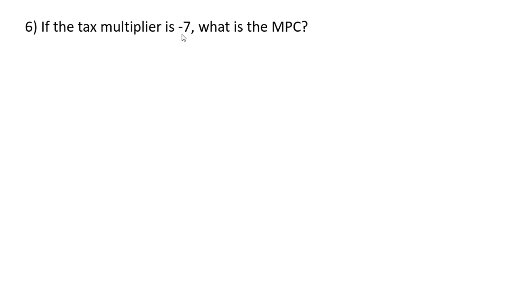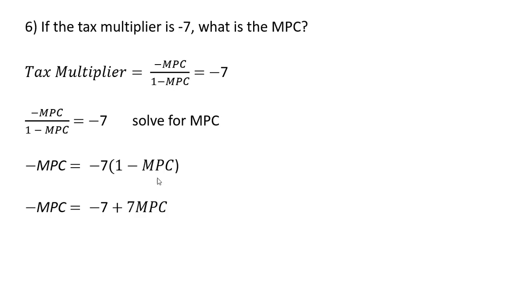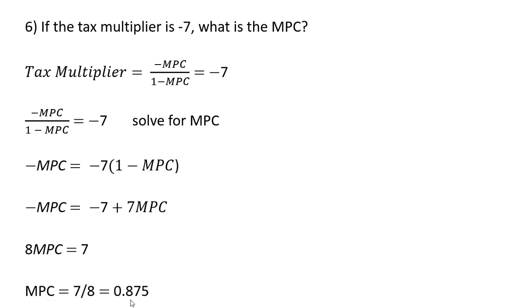Example 6. If the tax multiplier is minus 7, what is the MPC? The tax multiplier is given by the equation, and we set it equal to minus 7 to solve for MPC. Multiplying both sides by 1 minus MPC: on the right-hand side, minus 7 times 1 is minus 7, and minus 7 times minus MPC is plus 7 MPC. Adding MPC to both sides and adding 7 to both sides gives 8 MPC equals 7. Dividing through by 8, we get an MPC of 0.875.